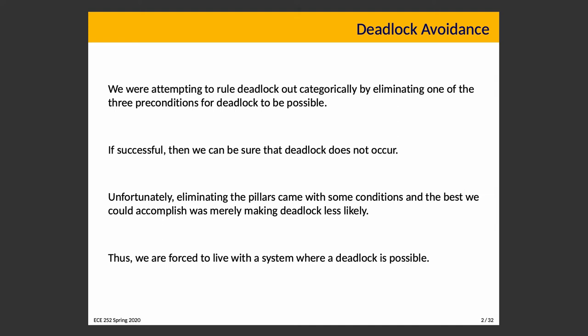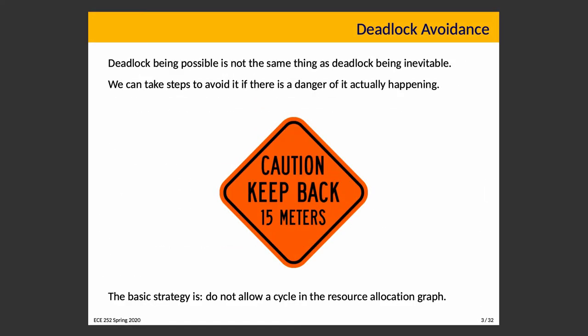This takes us to the key distinction between deadlock prevention and deadlock avoidance. Prevention is ruling it out for the whole system. Avoidance means we live in a world where deadlock could happen, but we're going to try our hardest to never get into that situation. Just because a deadlock is possible doesn't mean that deadlock is inevitable. We can take steps to avoid it if we think there is a danger of it actually happening, and the goal is to stay out of danger.